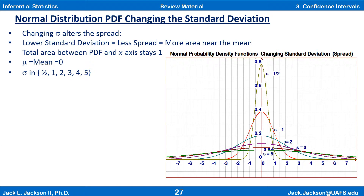Recall that changing the value of the standard deviation, sigma, alters the spread. The lower the standard deviation, the less spread there is — the more area is concentrated near the mean. Remember that the total area between any PDF curve and the x-axis is 1. So a normal PDF with a lower standard deviation will be taller and skinnier. Here we have graphed several normal PDFs all with mean 0, with standard deviations of 0.5, 1, 2, 3, 4, and 5. The bigger the standard deviation, the more spread out it is.